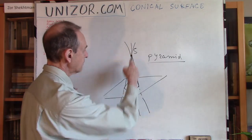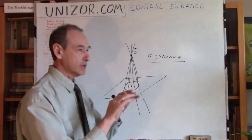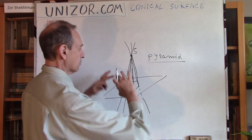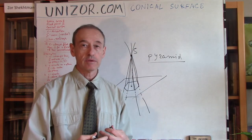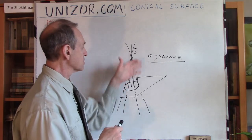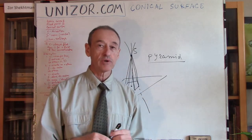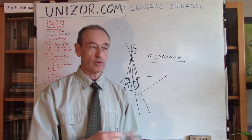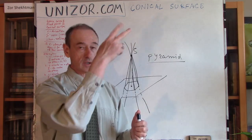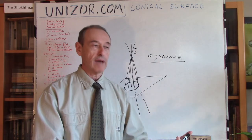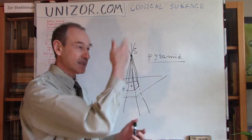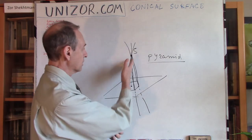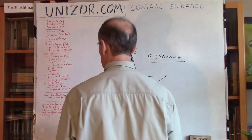I wanted to mention one more thing: if you have a conical surface, you can actually flatten it. For instance, if it's a pyramid, you can cut it along an edge, open it up, and it will lie flat on a plane without stretching. If you have a cylindrical surface, that also has this property — you can flatten it without stretching or any distortions, cutting along an edge if necessary. This works because both surfaces consist of straight lines.